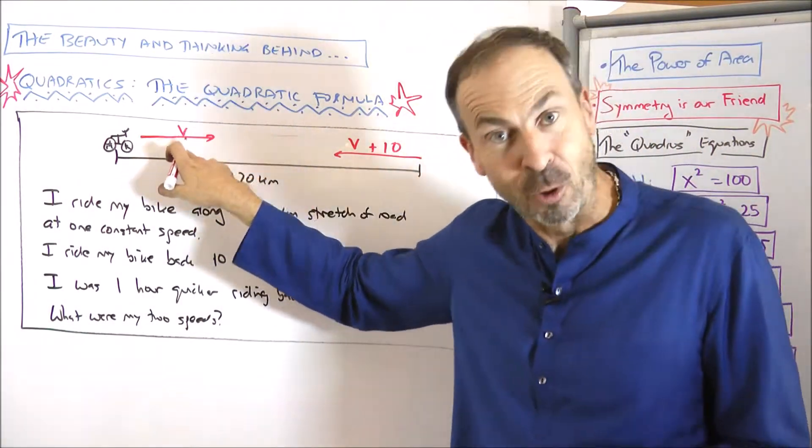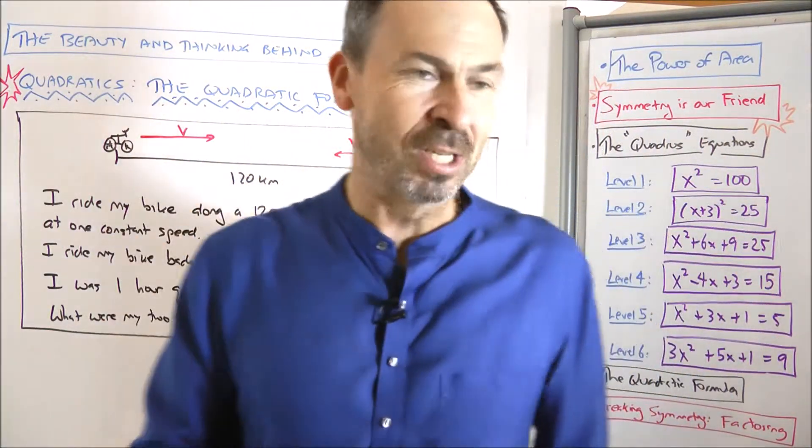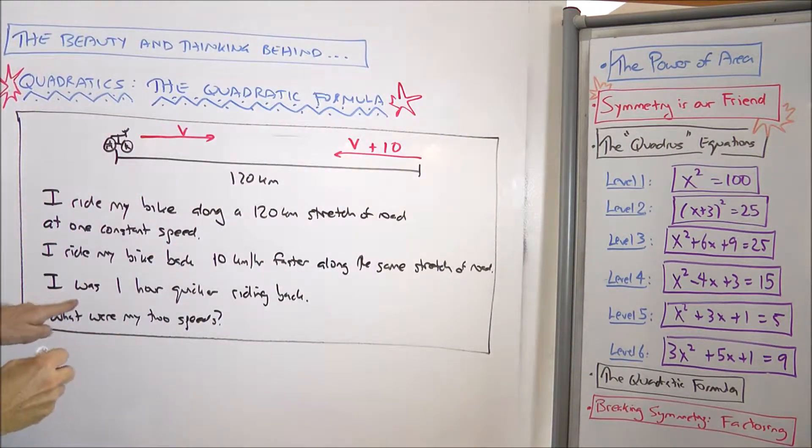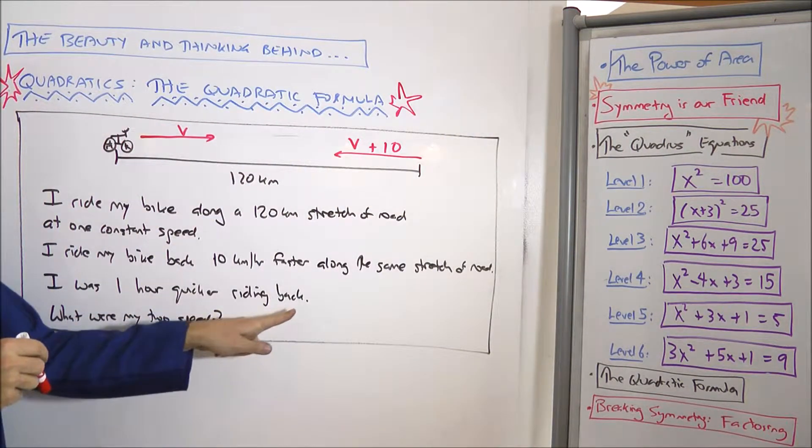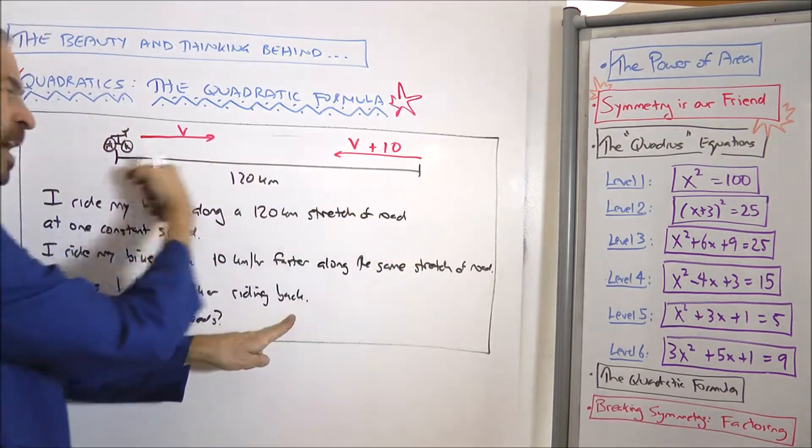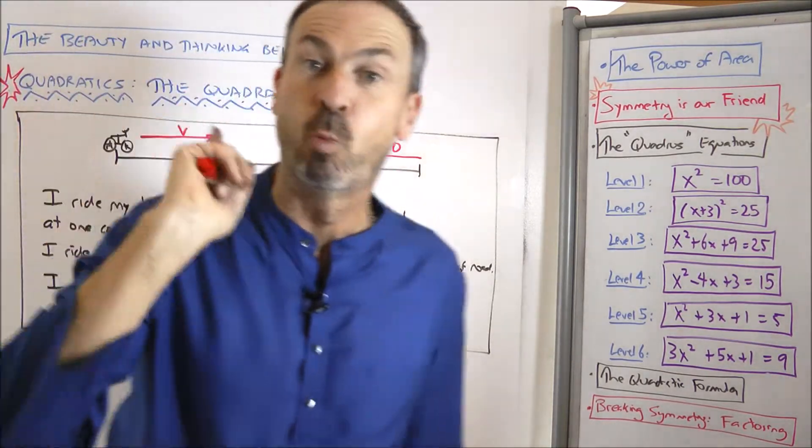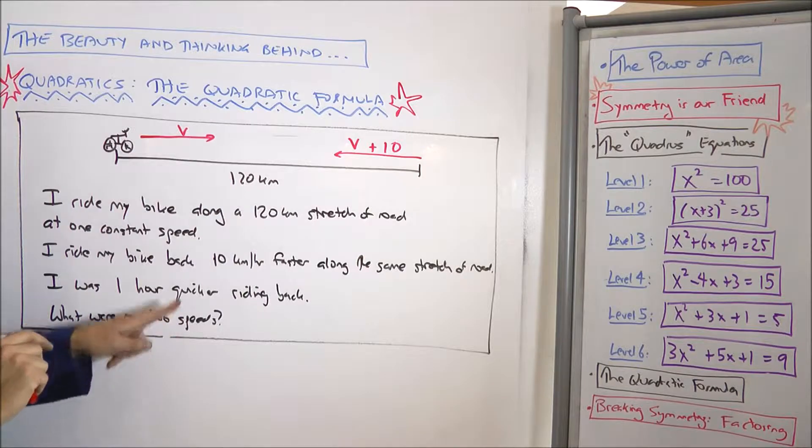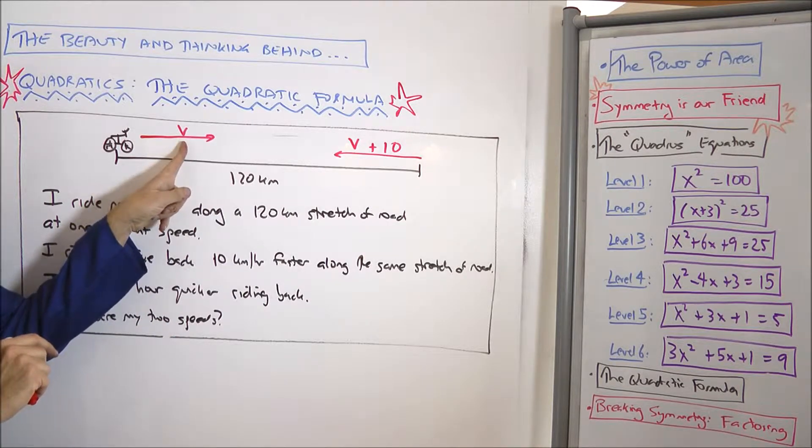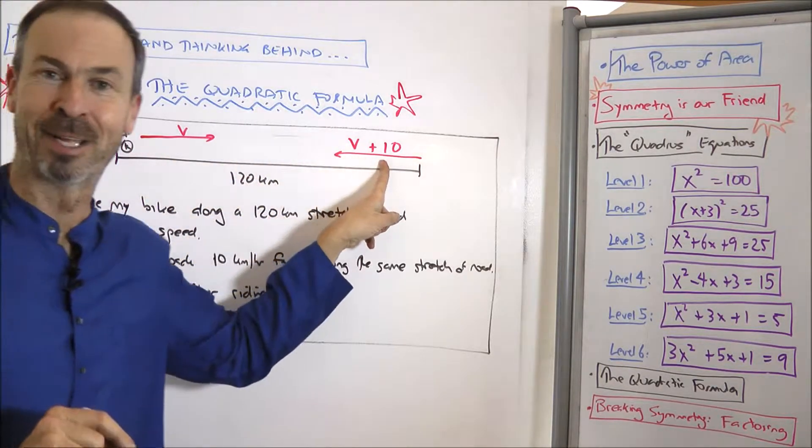Namely 10 kilometers faster than that constant speed. And my question says, note that I was one hour quicker riding back. So I was actually, since I was going faster, it took me less time. In fact, I was one hour quicker going back. What were my two speeds? What was this initial speed? And what's the speed plus 10?